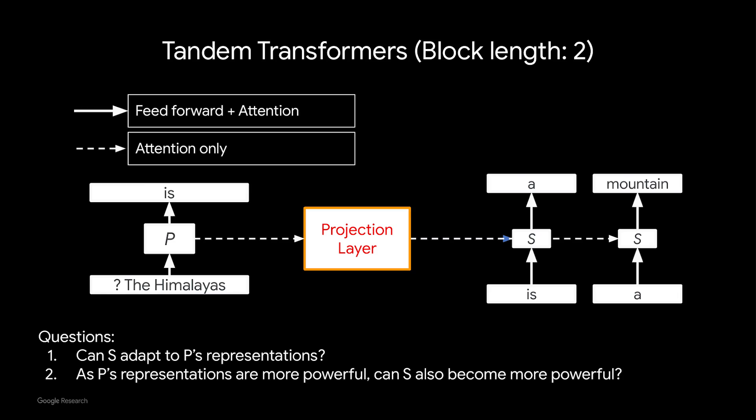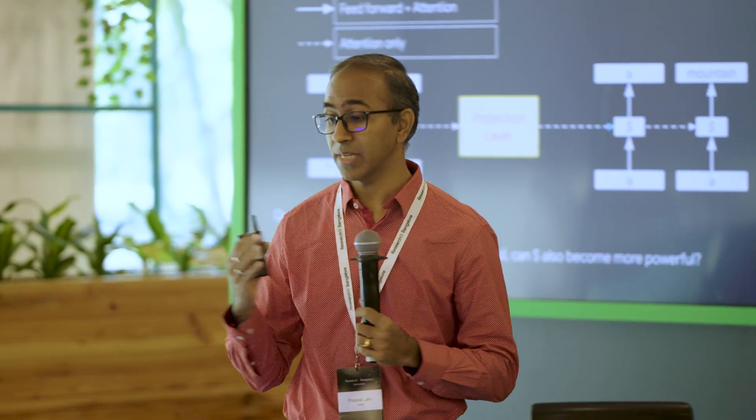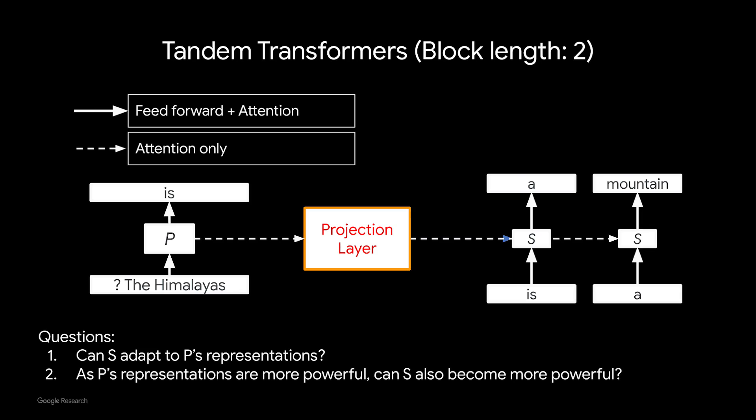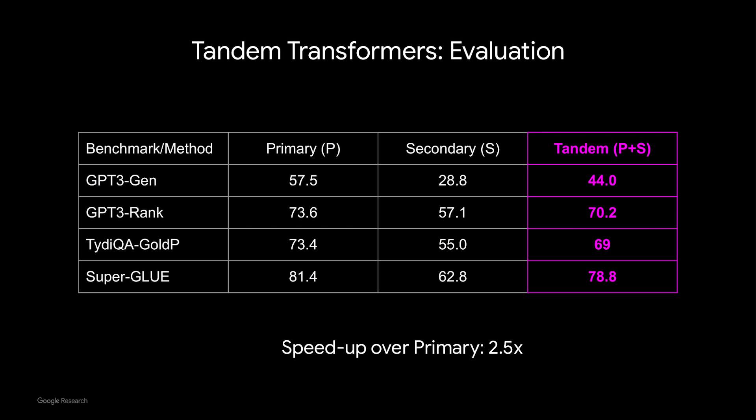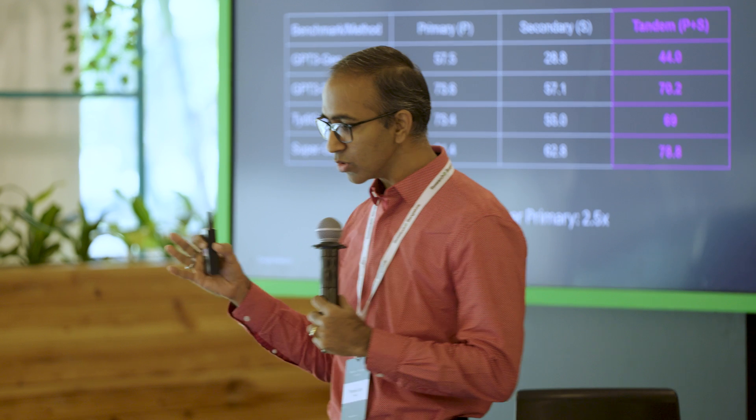To ensure that the secondary model can attend to and exploit the representations of the primary model, we have a projection layer sitting between them. The question is: can the secondary model adapt and use the primary model's representations to provide more accurate outputs? The answer is yes. Tandem, on multiple benchmarks, performs much better than the secondary model in terms of accuracy and is much closer to the primary model in quality. Furthermore, it can provide a significant speedup of the primary model — that is, it can be 2.5x faster.